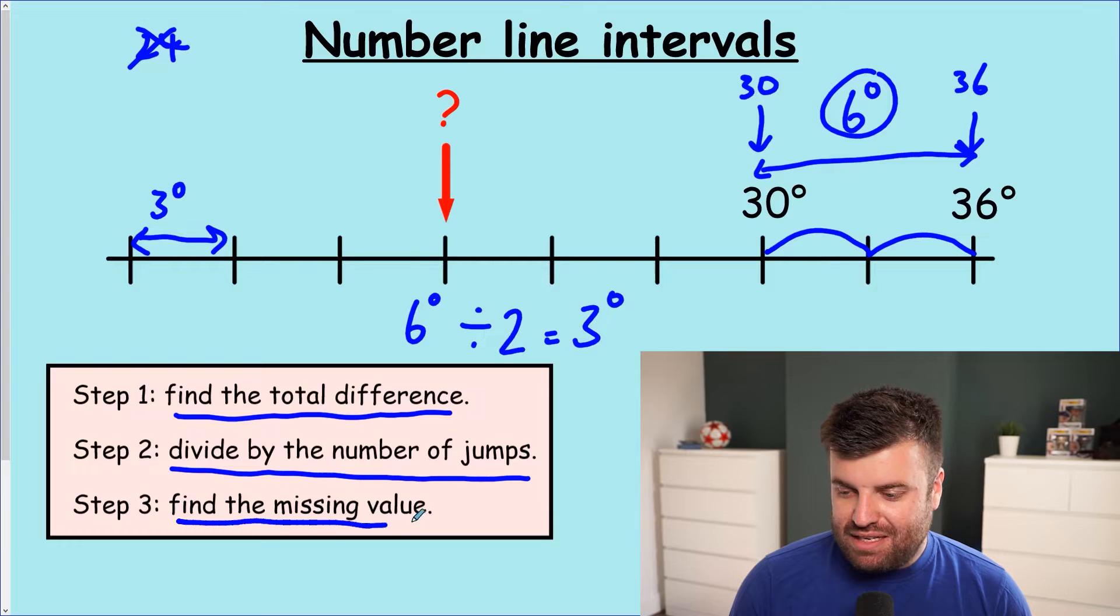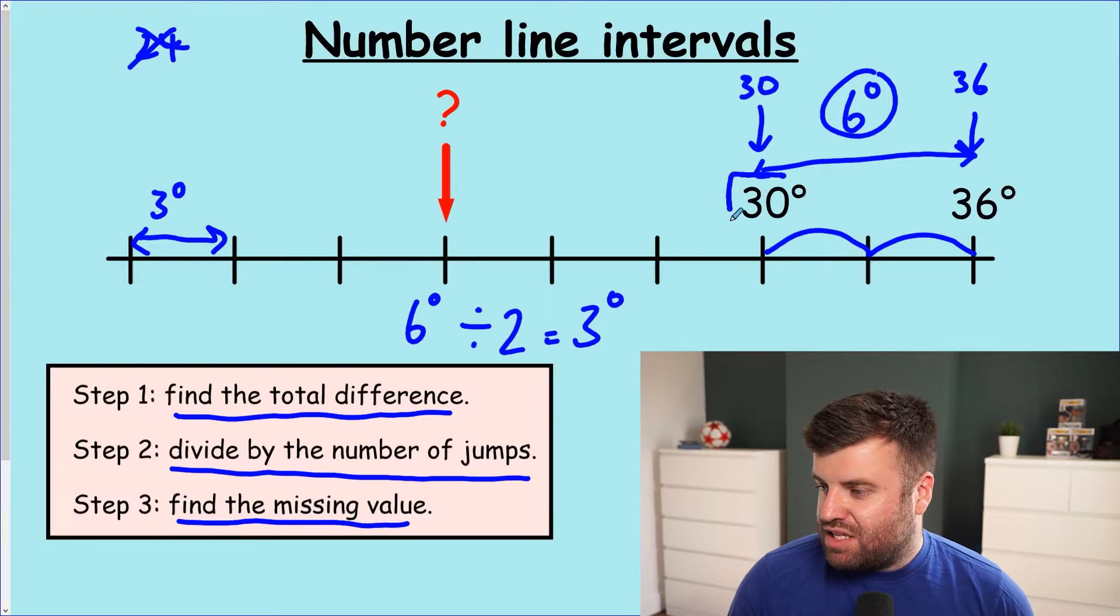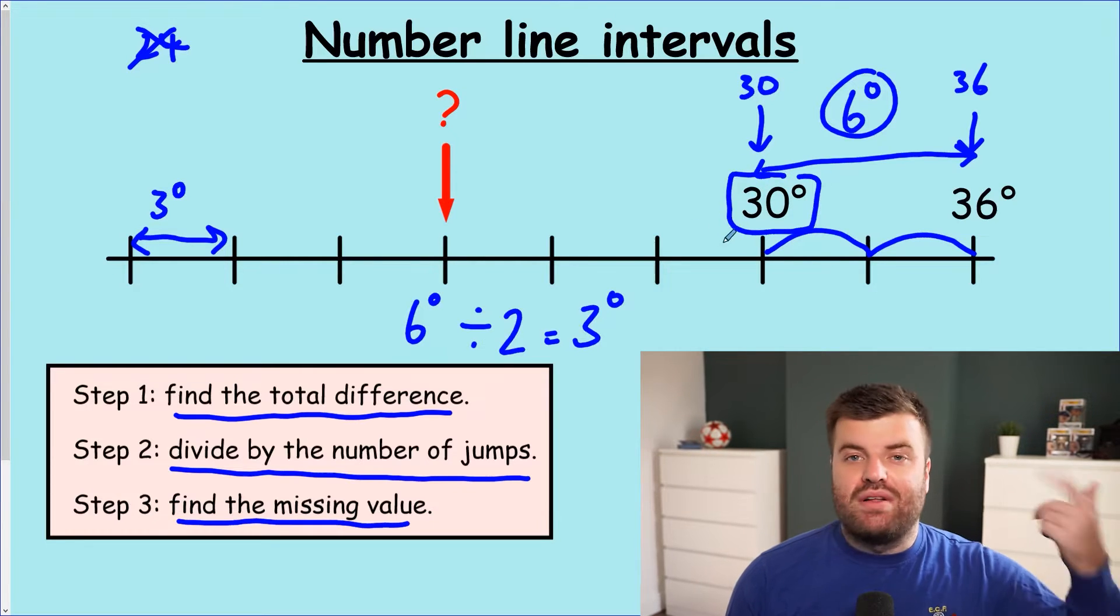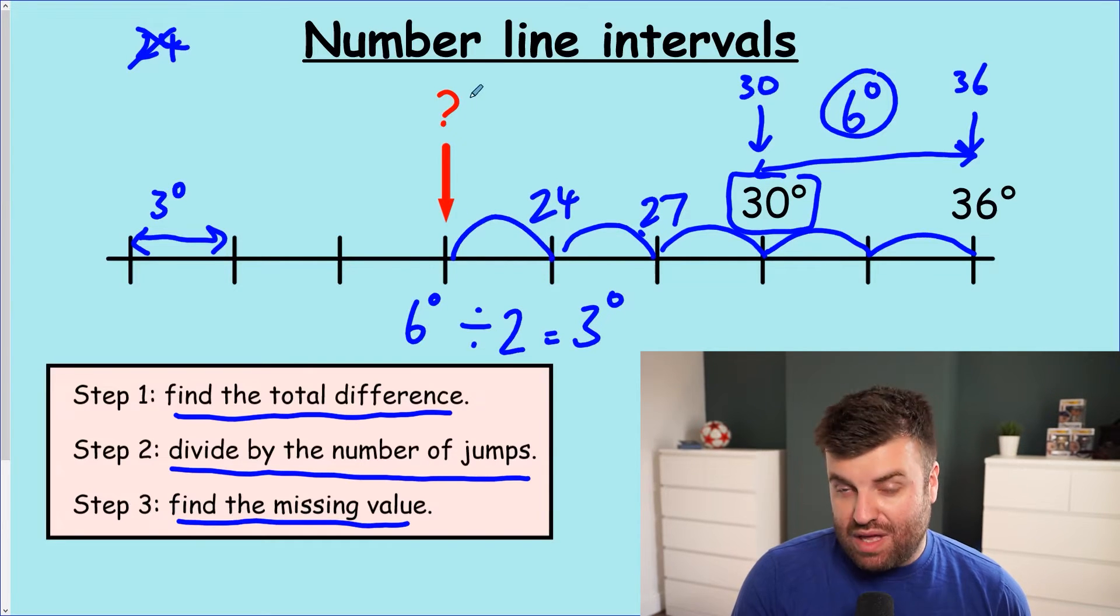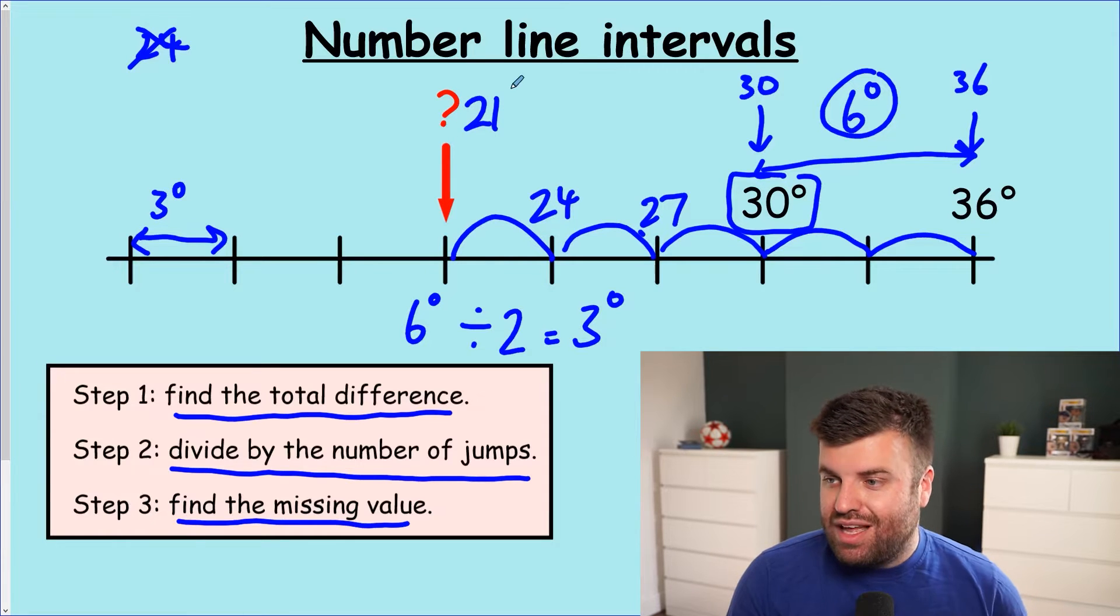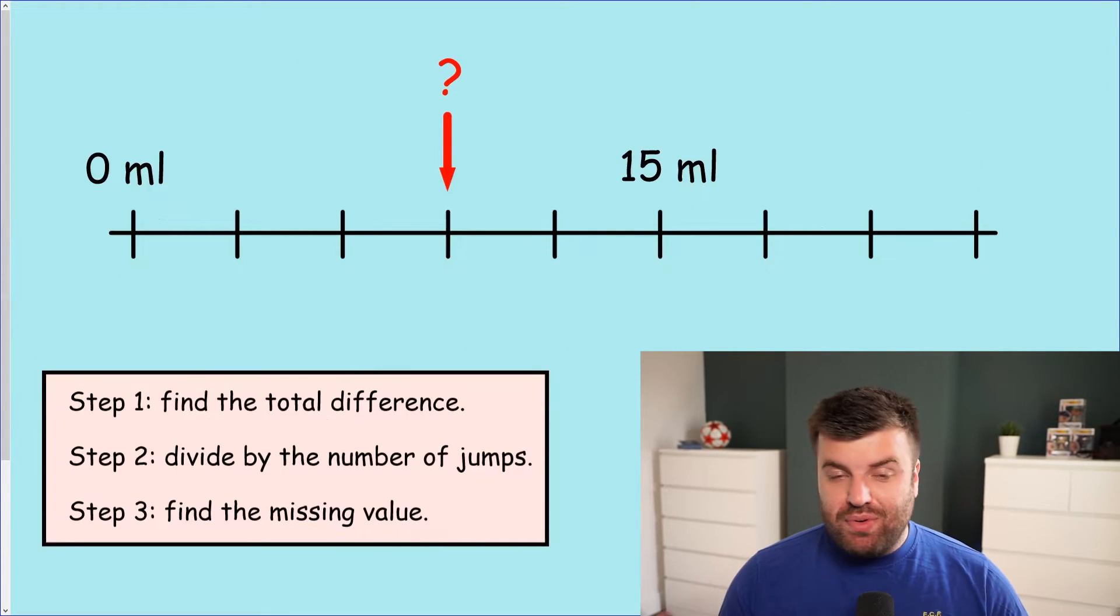Now the answer is easy to get to. Step three, find the missing value. That's because we're going to go here to our closest value, which is 30. We're going to count back now in threes. So here we have 27. Another three back, we have 24. And another three back, we're at our answer. It is 21 degrees. So the technique really is as simple as that. Why don't we have a go at another question?